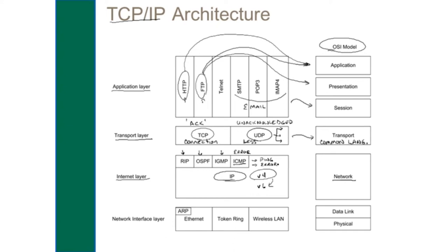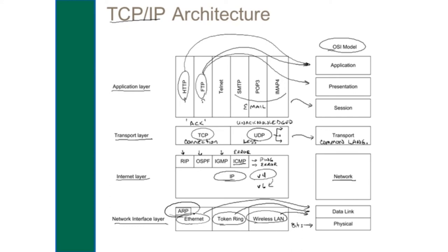The last layer in the TCP/IP model is the network interface layer, where communications happen at the physical address. Ethernet and Token Ring are common encapsulation protocols, both involving physical addresses to communicate. Wireless LANs use radio frequencies for communications. These all describe things at the data link layer, but they also have to be turned into bits for physical transmission. Because of the need to resolve physical addresses, the TCP/IP model defines the Address Resolution Protocol (ARP), which converts an IP address to a physical address so delivery can be made to the actual physical location.